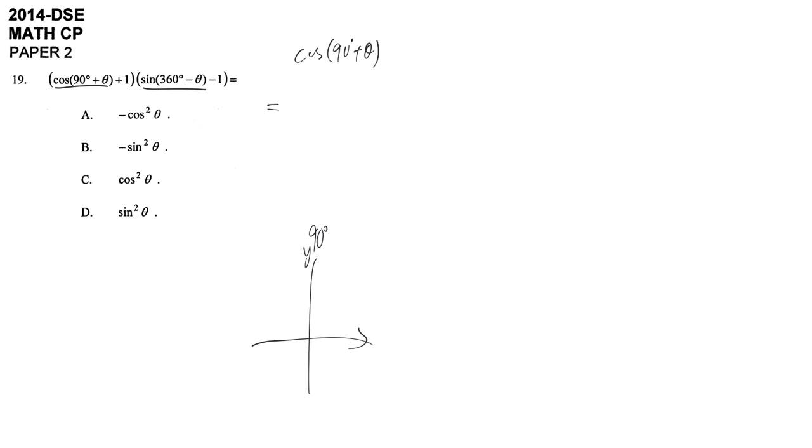First, this one is related to y-axis at 90 degrees here, so we have to change the form. And 90 degree plus theta is here, which is the sine region, but we have cosine here. So when we transform it, it will become negative, and then because it's related to y-axis, cosine will change to sine theta.